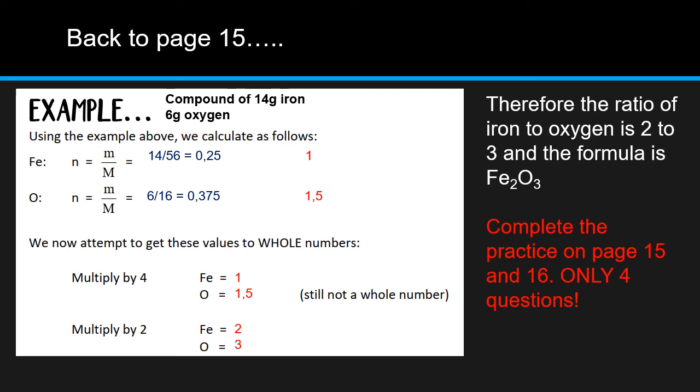The example I want to go through with you now is the iron oxide example on the page. So if we have a compound of 14 grams of iron and 6 grams of oxygen, how do we calculate the empirical formula of this? So first we write down what we have, each element. The second thing we're going to do is we are going to work out the moles. So here it's literally going to be mass divided by molecular mass. So yeah, for iron I'm going to get 0.25, and for oxygen I'm going to get 0.375.